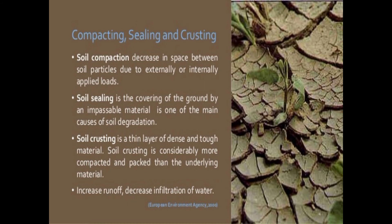Compaction, sealing, and crusting are also very important parts of physical degradation. Soil compaction is the increase in space between soil particles due to externally or internally applied loads. Soil sealing is the covering of the ground by impermeable material and is one of the main causes of soil degradation. Soil crusting is a thin compact layer more packed than the underlying material, which increases runoff and decreases water infiltration. This property is maximally shown in black cotton soil, which we see in the Marathwada region.